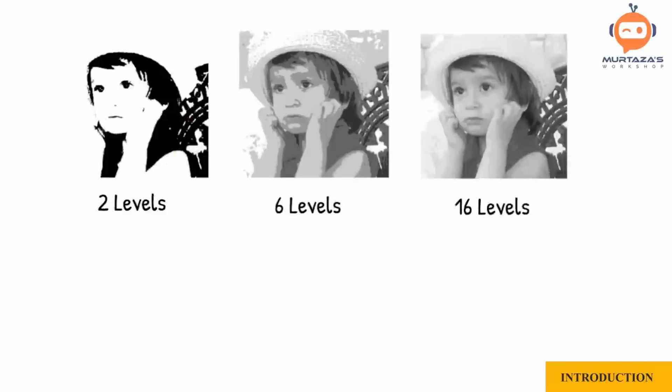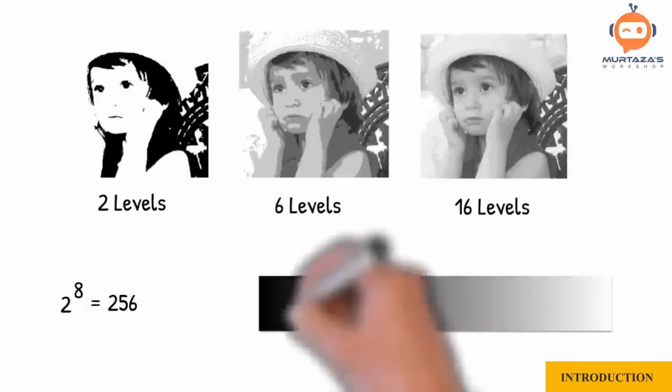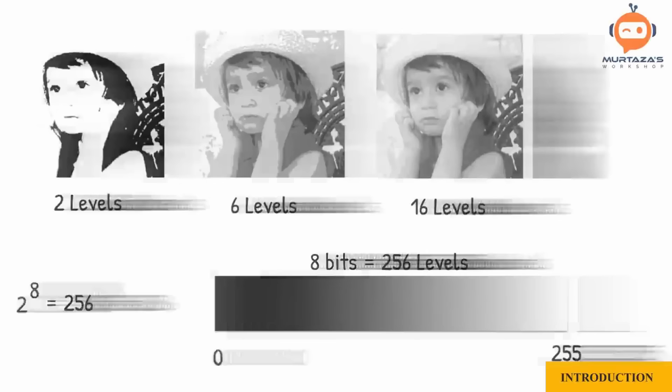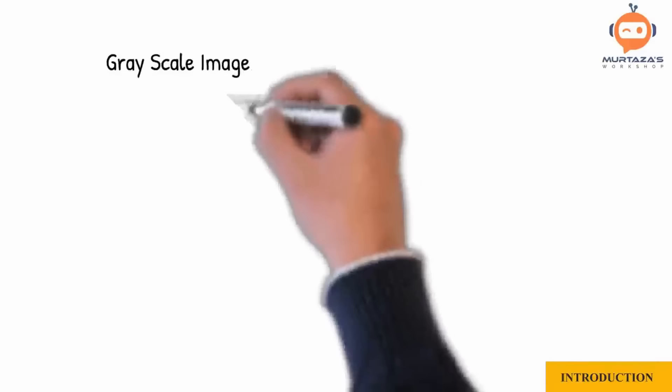We will be using an 8-bit value, which gives us a resolution of 256, where 0 will be black and 255 will be white. This means we now have 254 shades of gray between white and black. This image is known as a grayscale image.